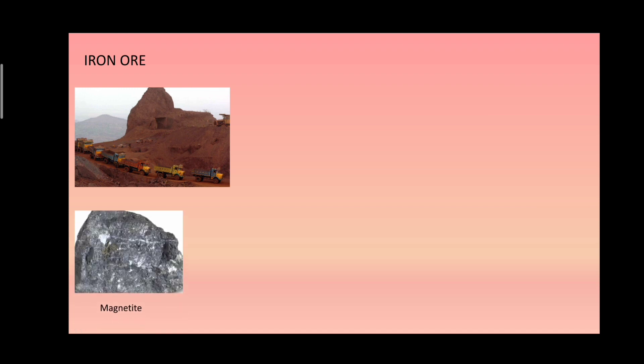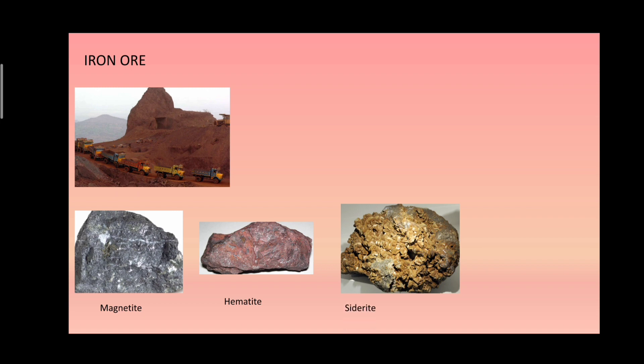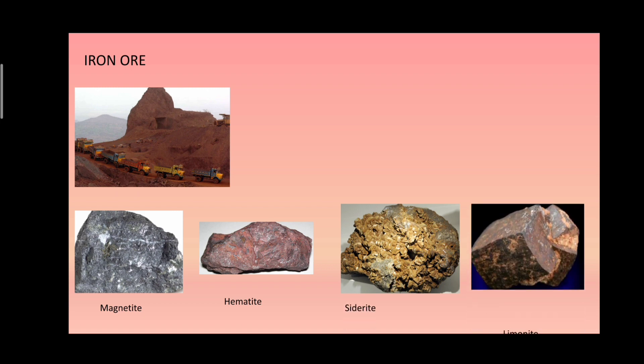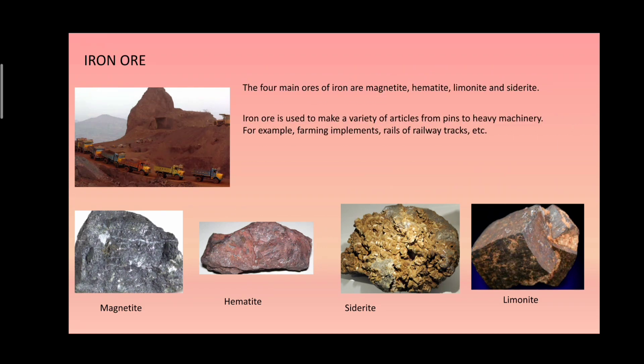Next we will study more on ores. The first one is iron ore. There are four different types of iron ore found in nature: magnetite, hematite, siderite, and limonite. Iron ore is used to make a variety of articles, from pins to heavy machinery — for example, farming implements and rails of railway tracks. You can give me more examples by writing in the comment section.